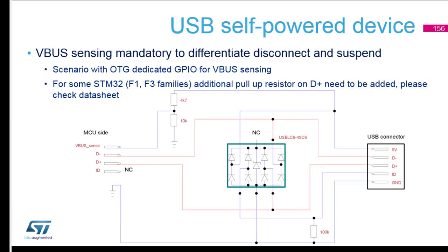For a self-powered device — similar to the Nucleo board use case, where there is independent power for the board and then a USB application — the USB does not source the microcontroller or battery. In this scenario, you need to use the bigger version of the USB LC6. The ID pin is connected only to ground but still connected to the ESD protection. According to the specification you should handle VBUS sensing, but if you don't intend to use suspend or distinguish between suspend and disconnection, you can omit it.